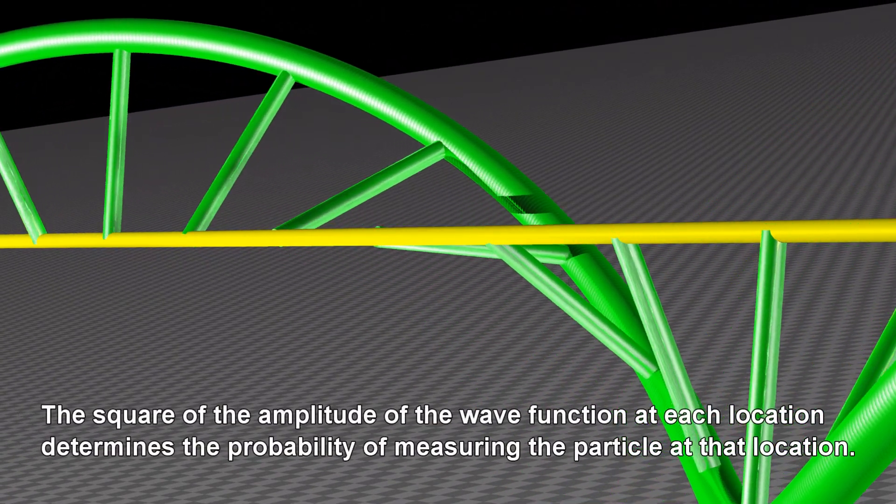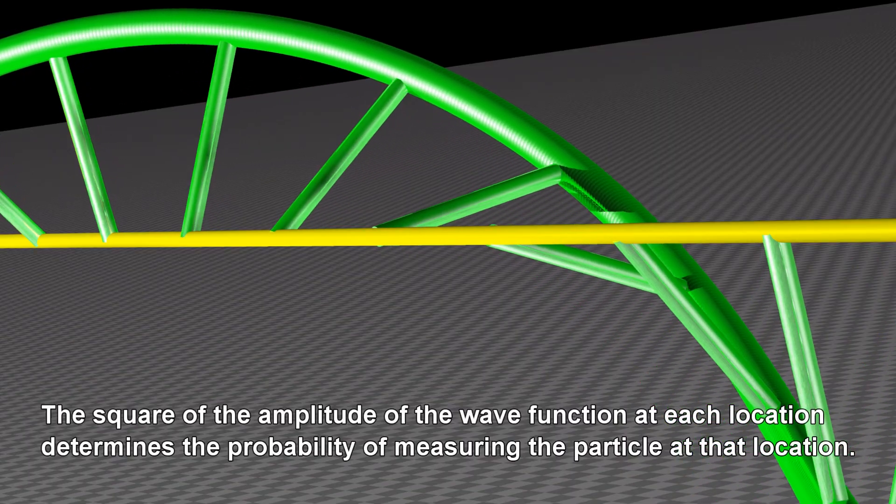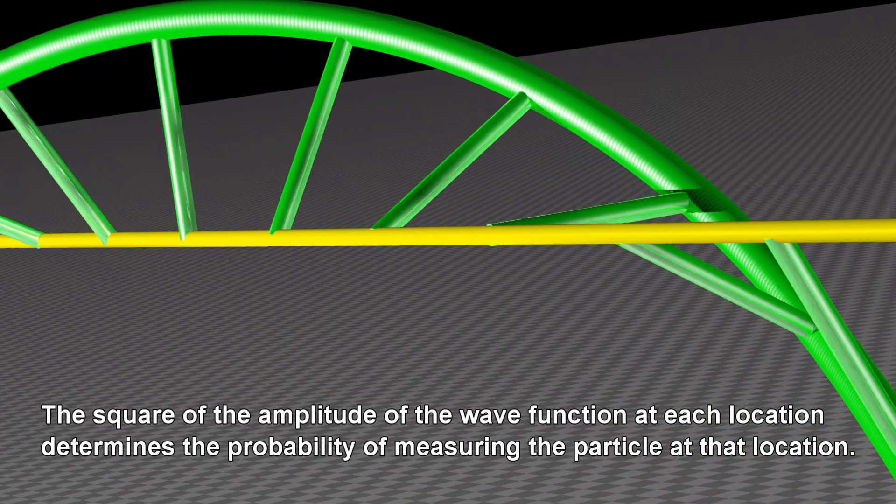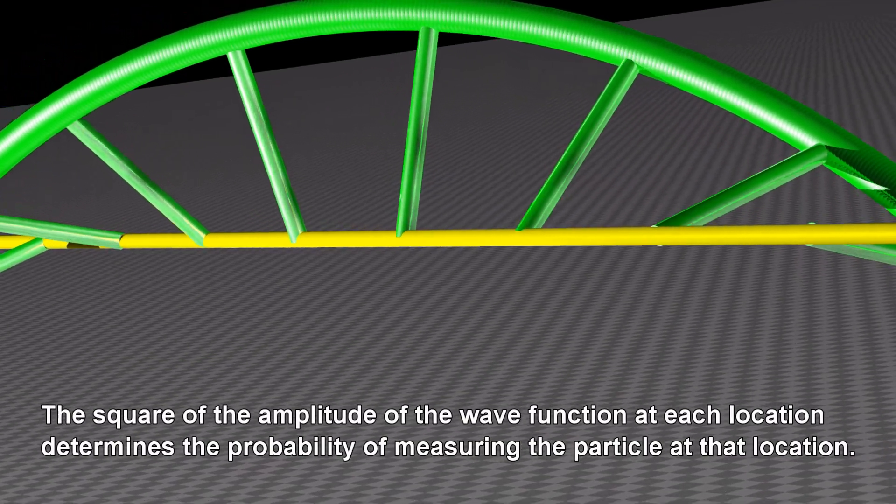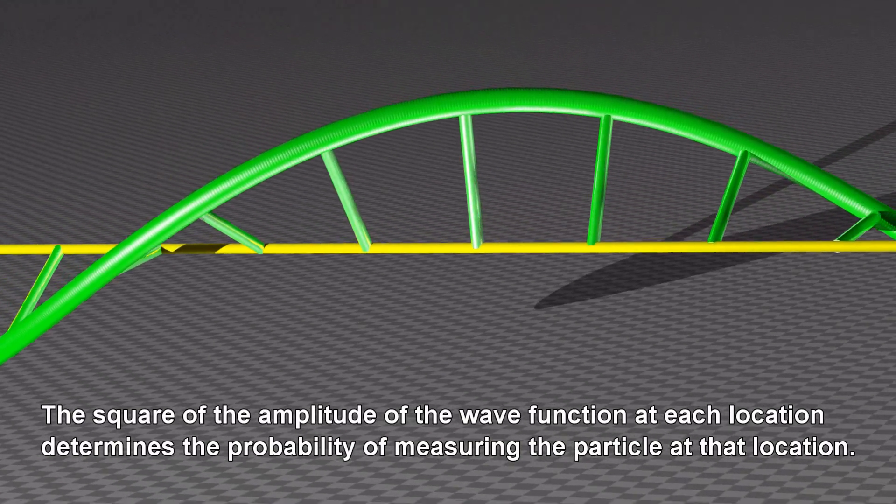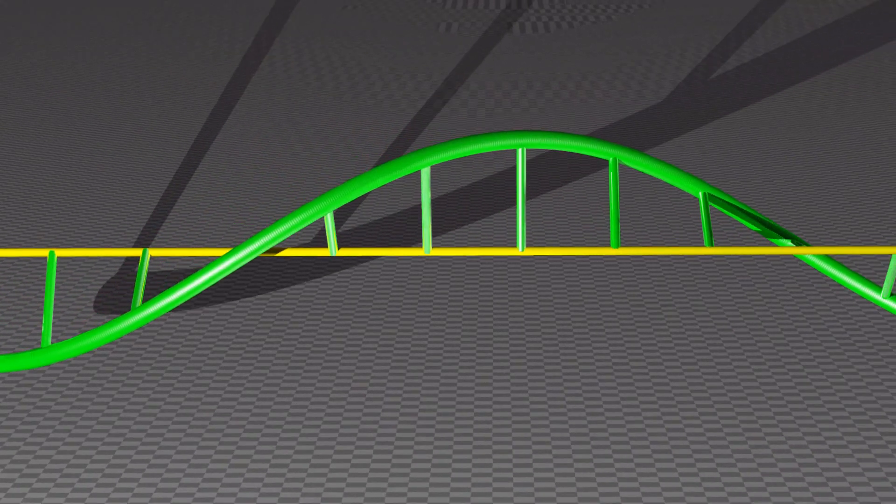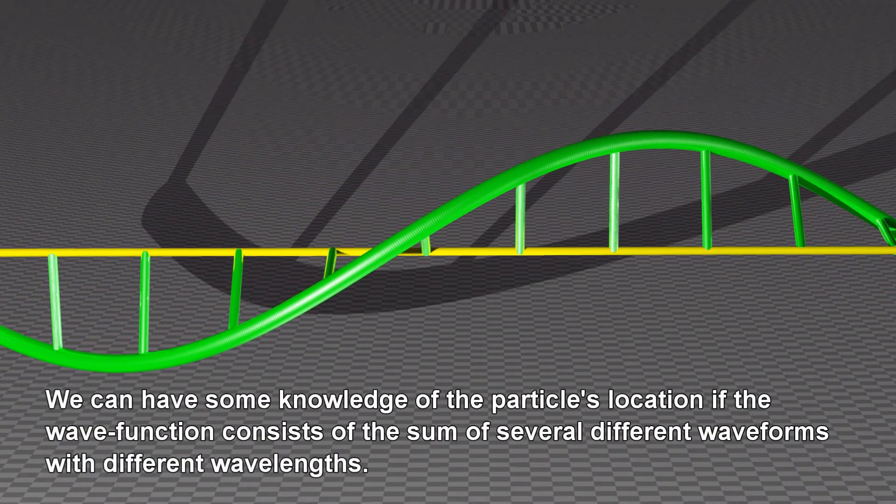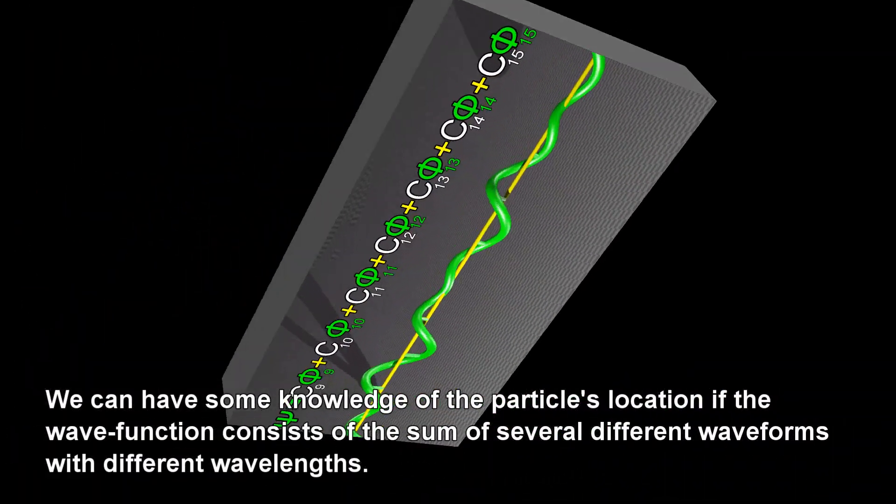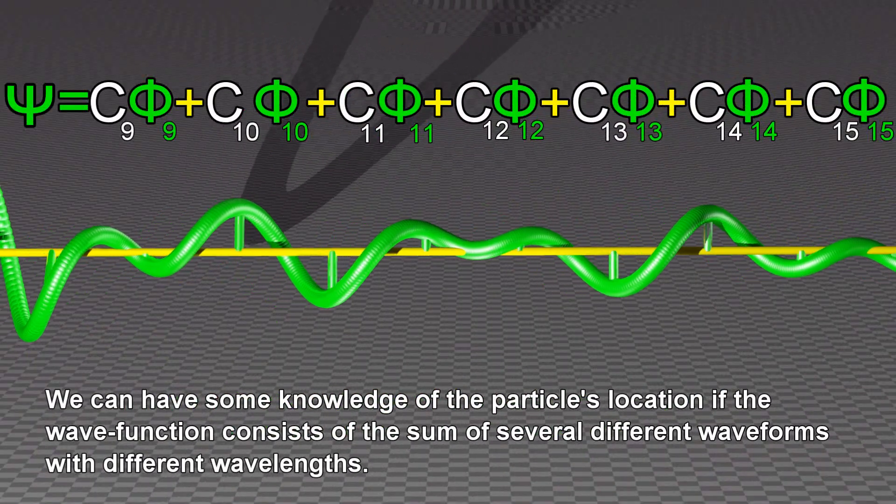The square of the amplitude of the wave function at each location determines the probability of measuring the particle at that location. We can have some knowledge of the particle's location if the wave function consists of the sum of several different waveforms with different wavelengths.